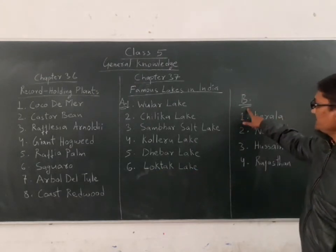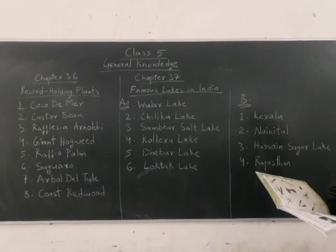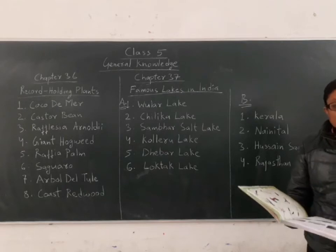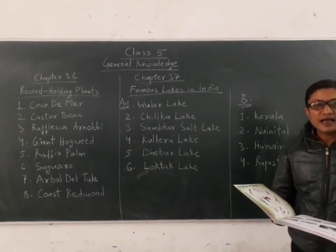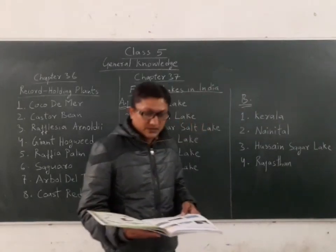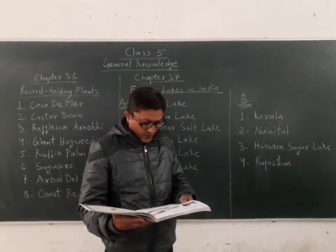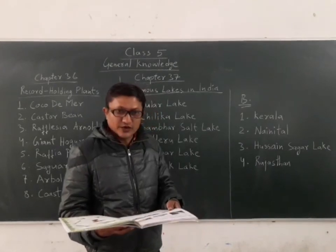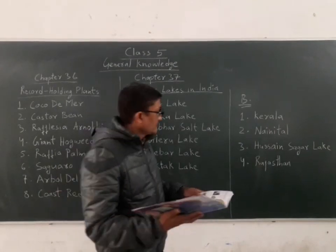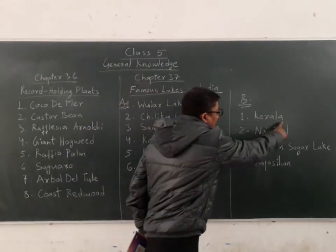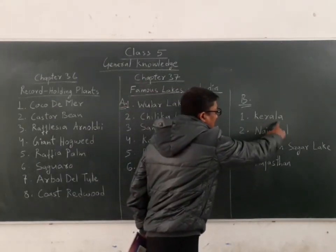Now we start Section B, where we answer the following questions using the help box. First question: where is Vembanad Lake, the longest lake in India, situated? It is situated in Kerala. First answer is Kerala.